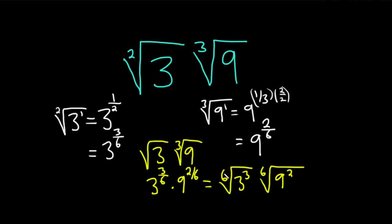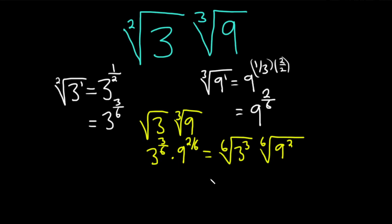Now we can write everything here as a power of three. So this is the sixth root of three cubed, sixth root of, this is three to the fourth because nine is three squared and it's being squared. So this is three to the fourth.